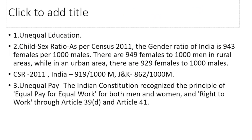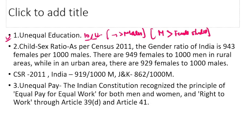Gender issues में पहला है unequal education। देखो 10th या 12th तक class में females almost equal या more than males मिलती हैं। लेकिन professional colleges में ratio देखो तो males का काफी ज़्यादा होता है as compared to female students। 12 तक पढ़ाने के बाद उनकी शादी की बातें start हो जाती हैं। Higher education और technical education में ratio tilted towards males होता है।